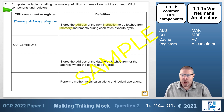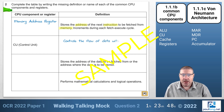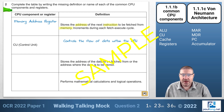The next component is the Control Unit, and we need a definition. I'm going to write that it controls the flow of data within the CPU. I'm not restricted to just that, so I'll also add that it controls the flow of data between the CPU and the RAM, to back up the answer in case the first part wasn't sufficient.